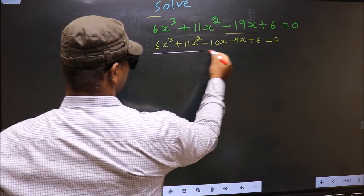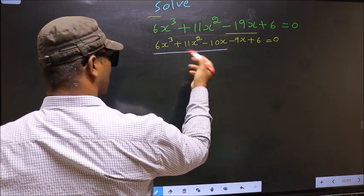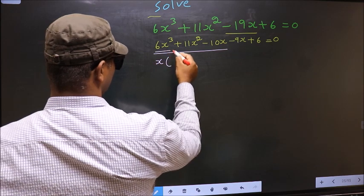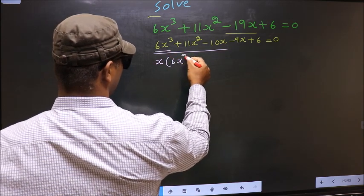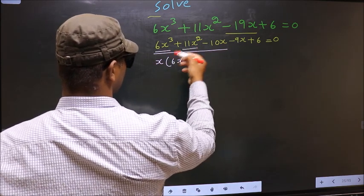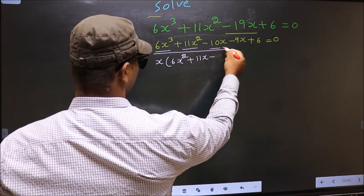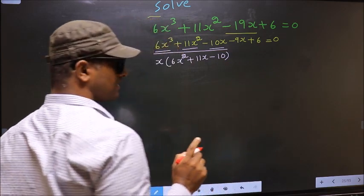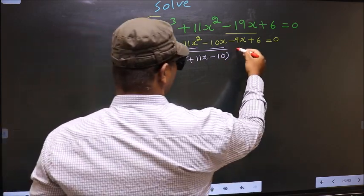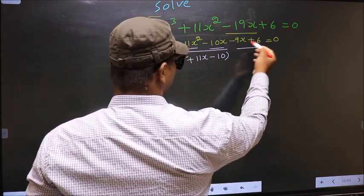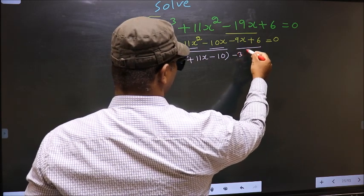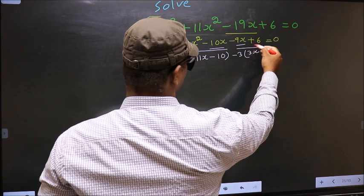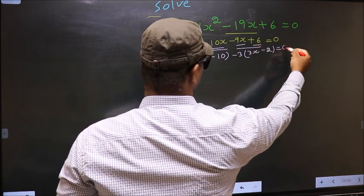Now from the first three terms, what can be taken out common is x. So you get x times 6x square plus 11x minus 10. From the last two terms, what can be taken out common is minus 3, giving minus 3 times 3x minus 2, equal to 0.